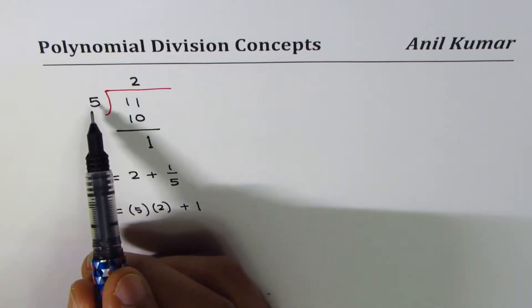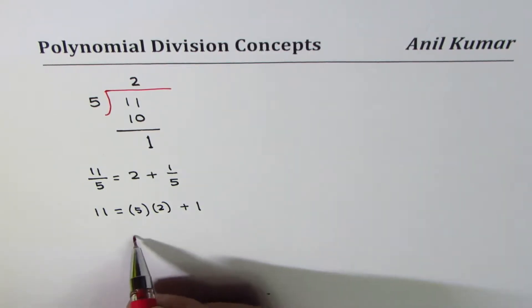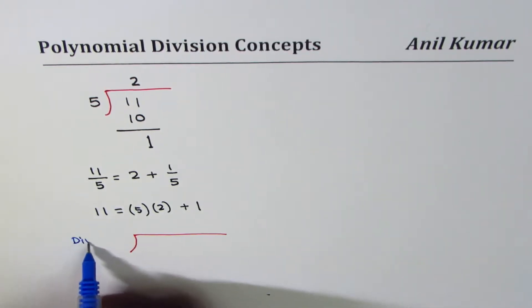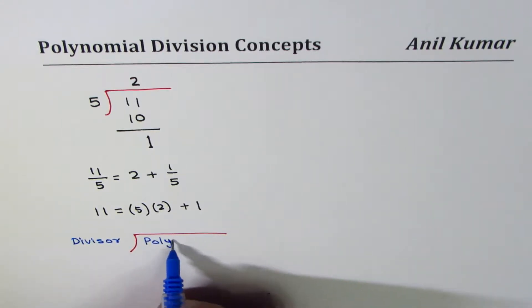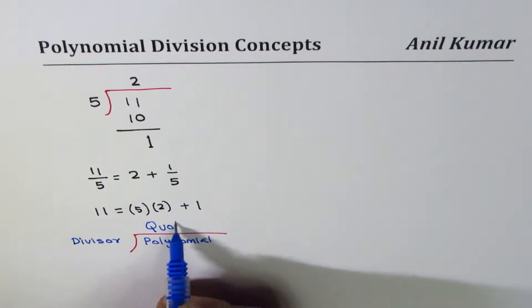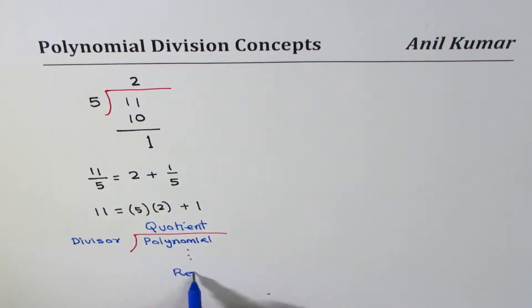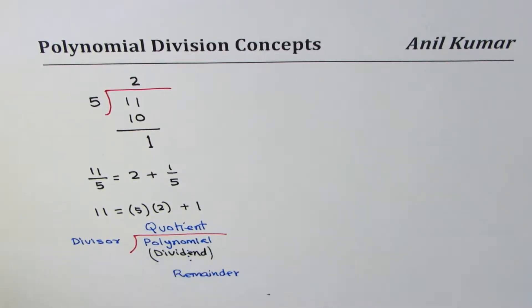When we multiply all terms by 5, we get 11 equals 5 times 2 plus 1 — that is, dividend equals divisor times quotient plus remainder. The terms we use are: divisor, quotient, and since we are working with polynomials, we call the function being divided the polynomial or dividend.